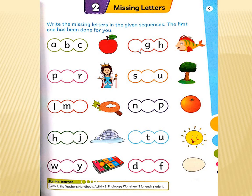Now this one, blank G H. This is a picture of a fish. What is the beginning letter of fish? F. What we will write here? F. F G H.